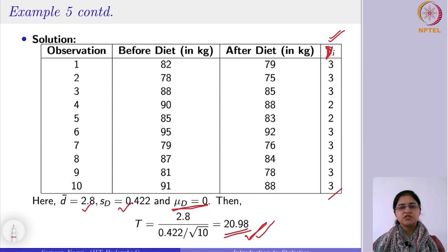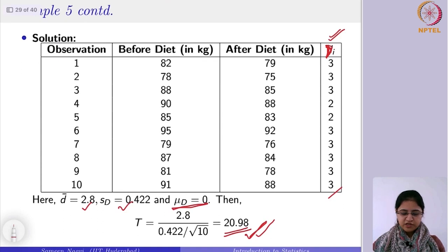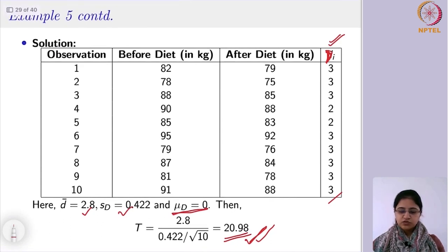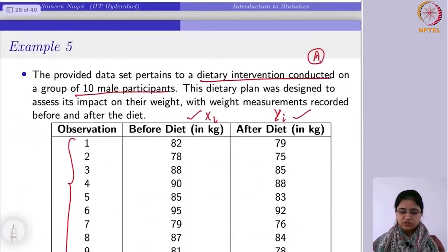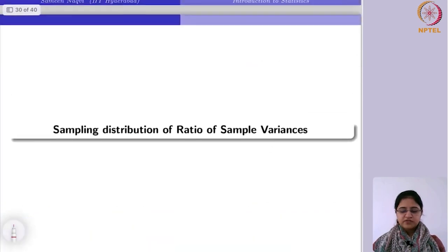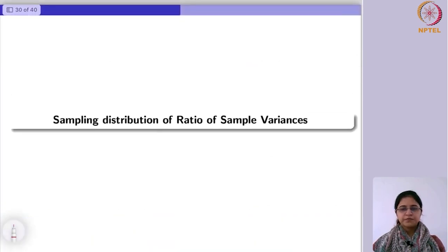From next week, we will see how to do estimation and other things. Here we are dealing with s_d. If sigma is known, you use the normal result; otherwise you use the t-distribution with the sample standard deviation. Now, having covered the difference of sample means, we are going to talk about the ratio of sample variances.